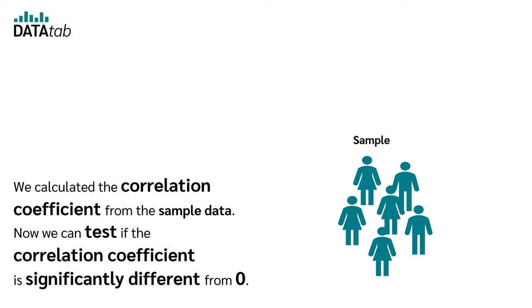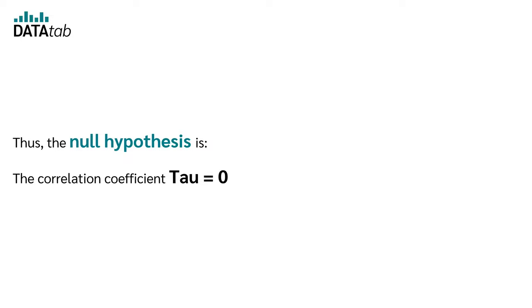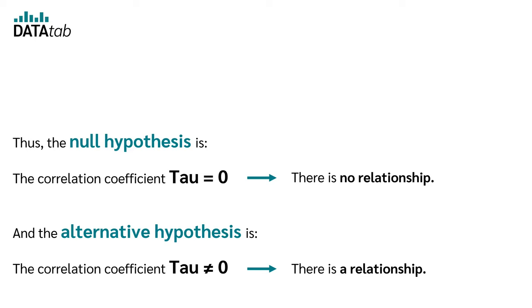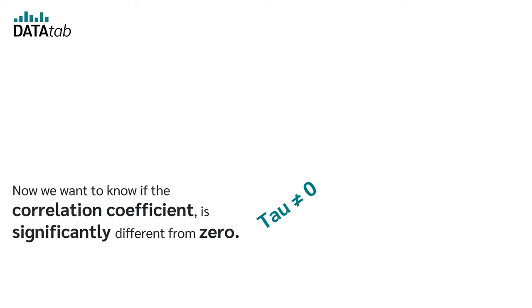Thus, the null hypothesis is, the correlation coefficient Tau is equal to zero, there is no relationship. And the alternative hypothesis is, the correlation coefficient Tau is unequal to zero, there is a relationship. Now, we want to know if the correlation coefficient is significantly different from zero.